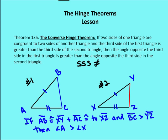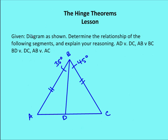I'd like for you to pause and think about the problem itself and try to answer it on your own. Given the diagram shown, AB is congruent to BC, so we have an isosceles triangle. Determine the relationship of the following segments and explain the reasoning: AD versus DC, AB versus BC, BD versus DC, and AB versus AC. Pause, see if you can figure it out, then come back and we'll explain the relationships.